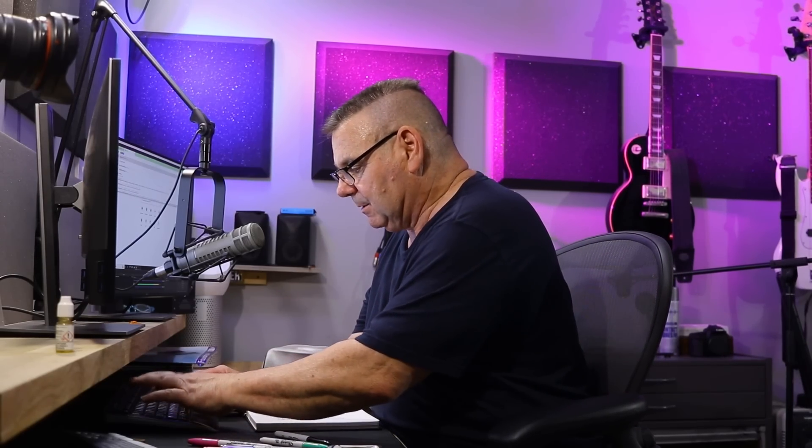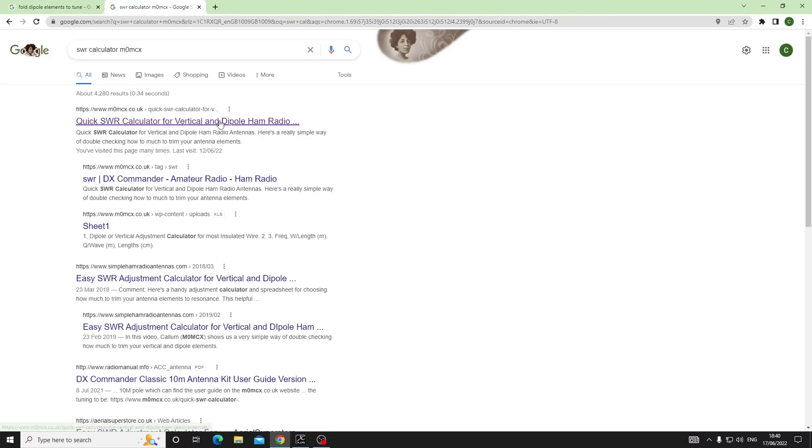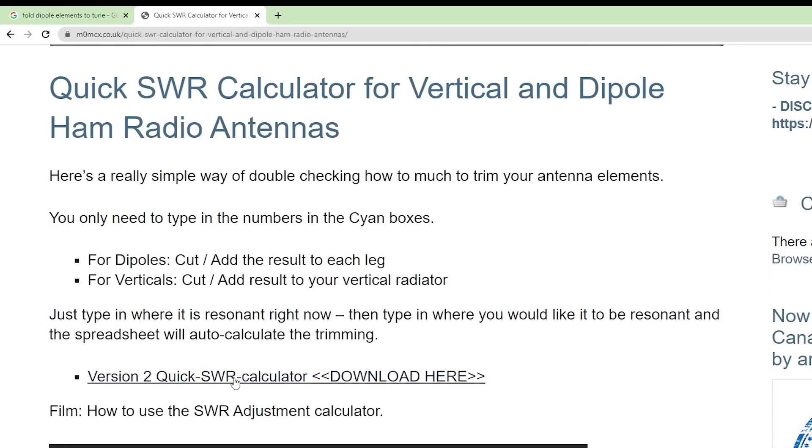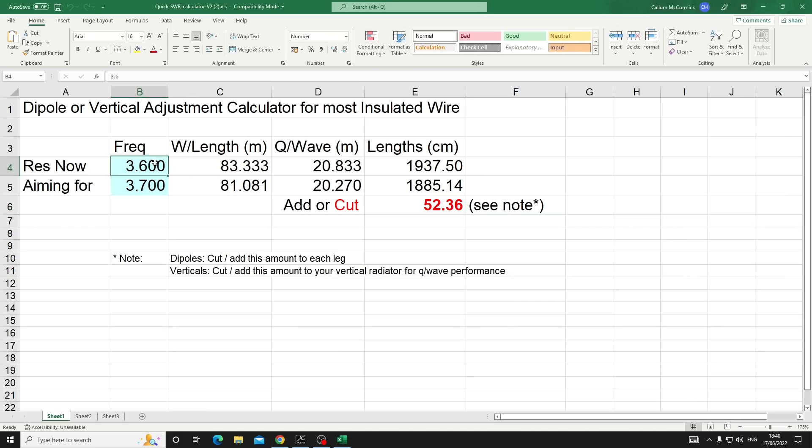If you want to do that calculation, we just go on Google and ask for the easy way out of this. SWR calculator M0MCX. There's this calculator I've shown you before. You can download it, run it if you've got something that will open Microsoft Excel. It says here you've got it tuned at 7.1 and you're after 7.2, and it says 13 centimeters which is about seven or eight inches.